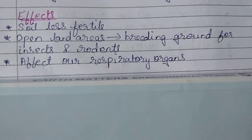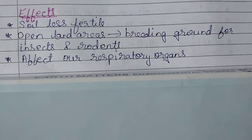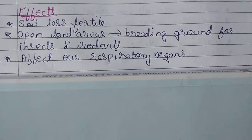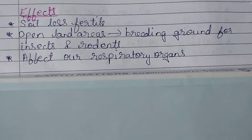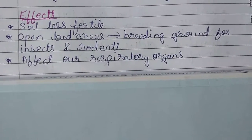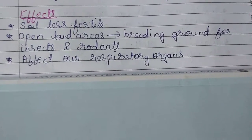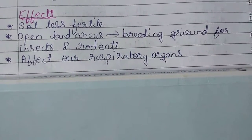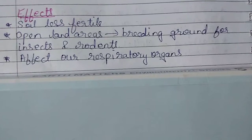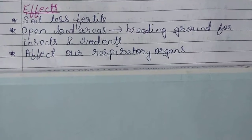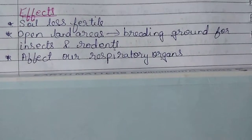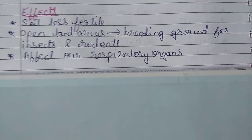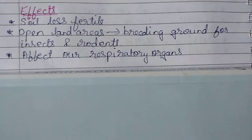In our previous video we were discussing about land pollution. We know there were four types of pollution: the first is air pollution, second water pollution, third land pollution, and fourth noise pollution. When pollutants such as chemicals from factories and household waste get mixed with soil, it makes the soil infertile and unusable for growing crops. This is called land pollution, also known as soil pollution.